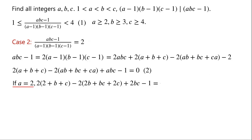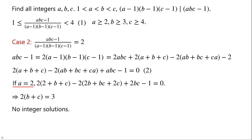If a = 2, then equation 2 becomes 2(2 + b + c) - 2(2b + bc + 2c) + 2bc - 1 = 0. Simplifying, we get 2(b + c) = 3. Note that the left side is even while the right side is odd, so Case 2 has no solutions when a = 2.